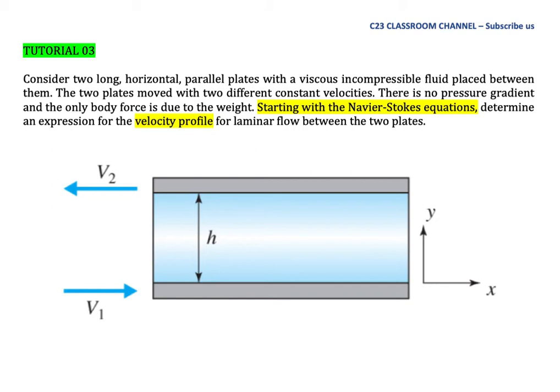Tutorial No. 3 on the Differential Forms of the Fundamental Laws. Consider two long, horizontal, parallel plates with a viscous, incompressible fluid placed between them. The two plates move with two different constant velocities. There is no pressure gradient and the only body force is due to weight. Starting with the Navier-Stokes equation, determine an expression for the velocity profile for laminar flow between the two plates.